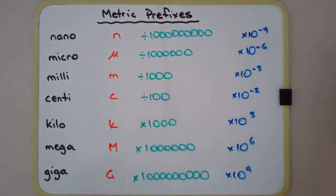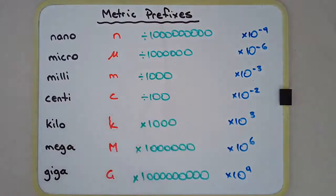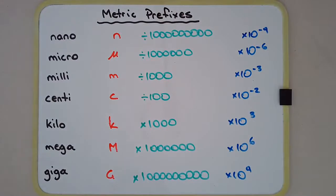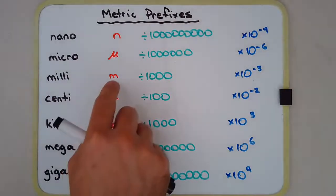For some reason kilo is still a lowercase k. One reason might be that the symbol for temperature measured in kelvin is a capital K, so to avoid ambiguity or confusion they resort to using a different case letter. Centi, milli, and nano are all lowercase of course.